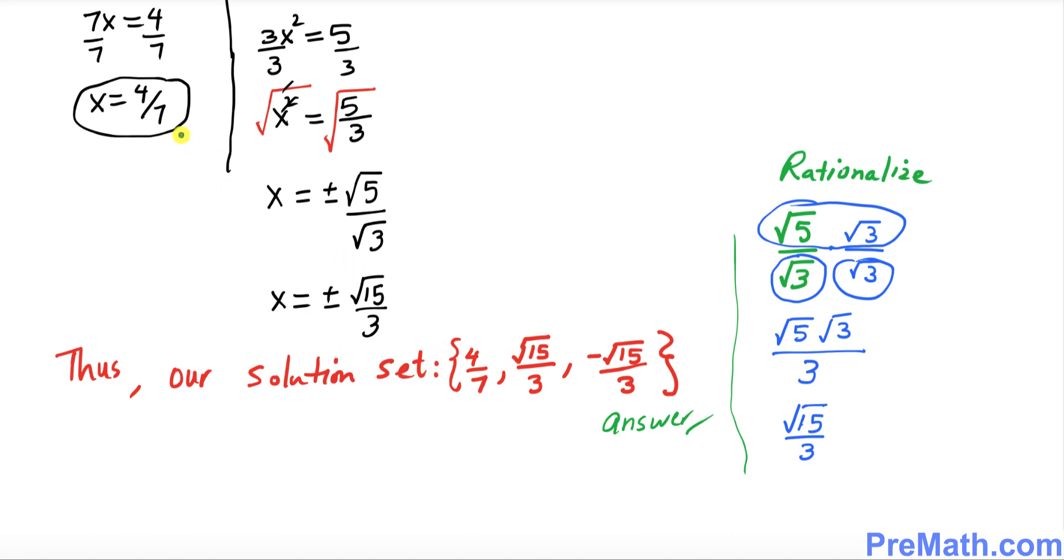Thus our solution set turns out to be 4 over 7 from here, and then square root of 15 over 3 with a positive sign over here, and then negative square root of 15 over 3 when you put a negative sign.